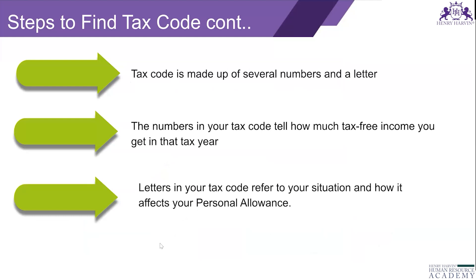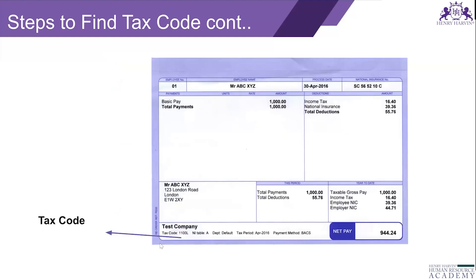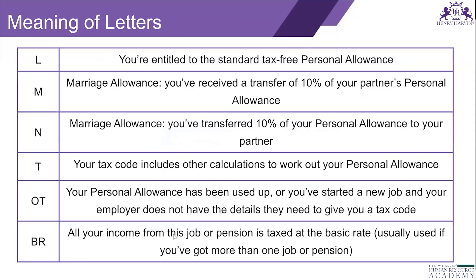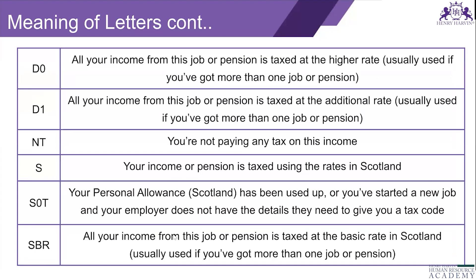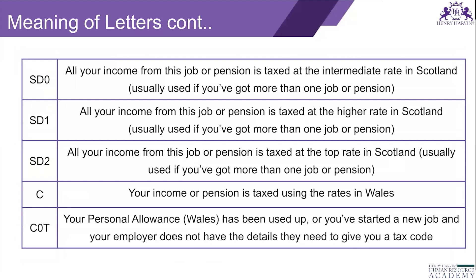The tax code is made up of numbers and letters. The numbers tell you how much tax-free income you get in that year. The letters refer to your situation — for example, L, M, N, T, 0T, BR. For Scotland, codes start with S (e.g., SL, ST), and for Wales, codes start with C (e.g., CD1). This is the same explanation as yesterday's session on tax codes.